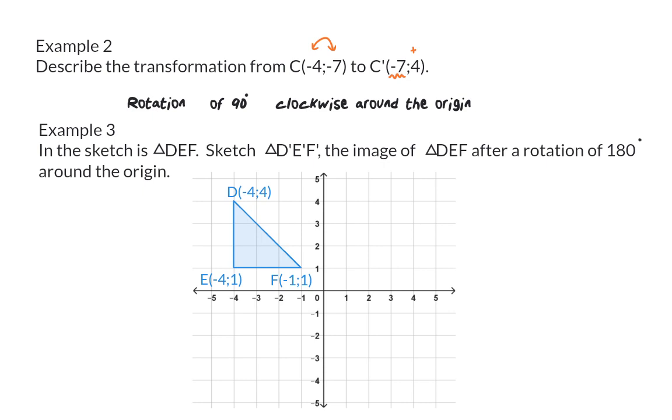For this rotation, you need to know that the sign of both coordinates have to change. So, starting with D, which is (-4,4), it will change to (4,-4). Next up, point E's (-4,1) changes to (4,-1). And now we can draw the image that was formed from the rotation.